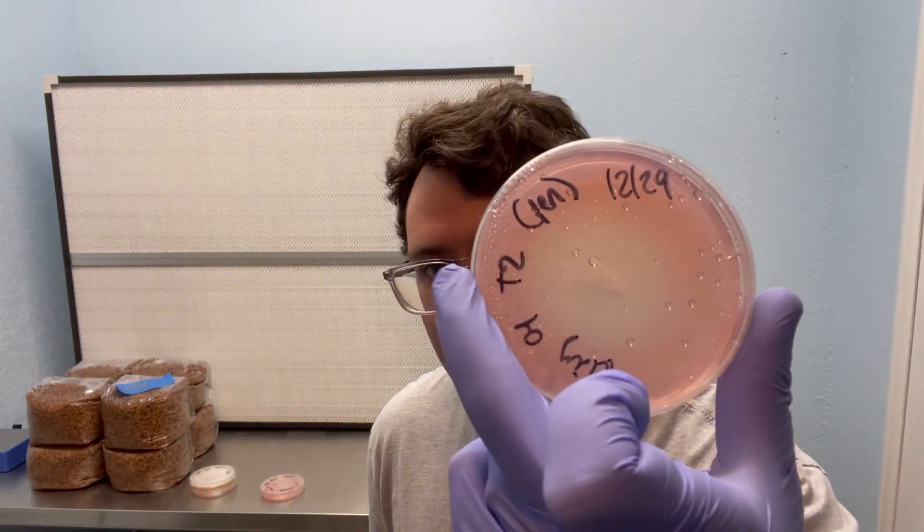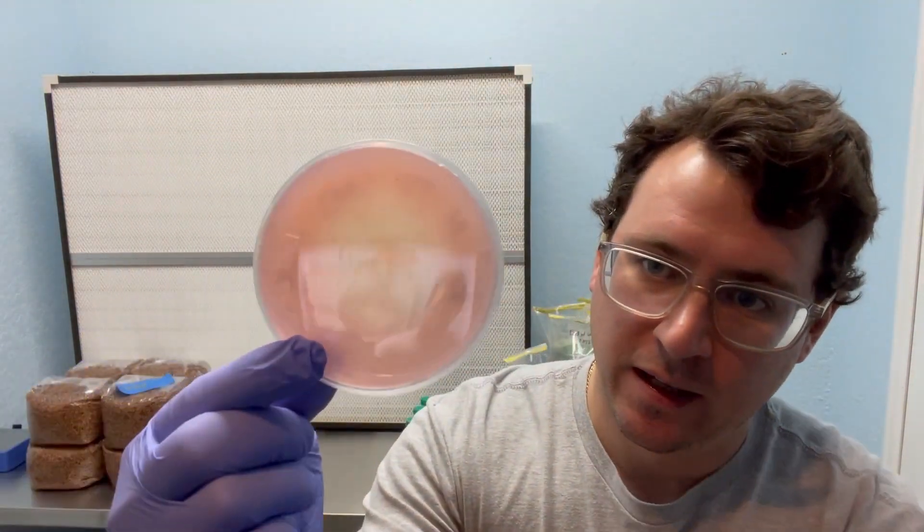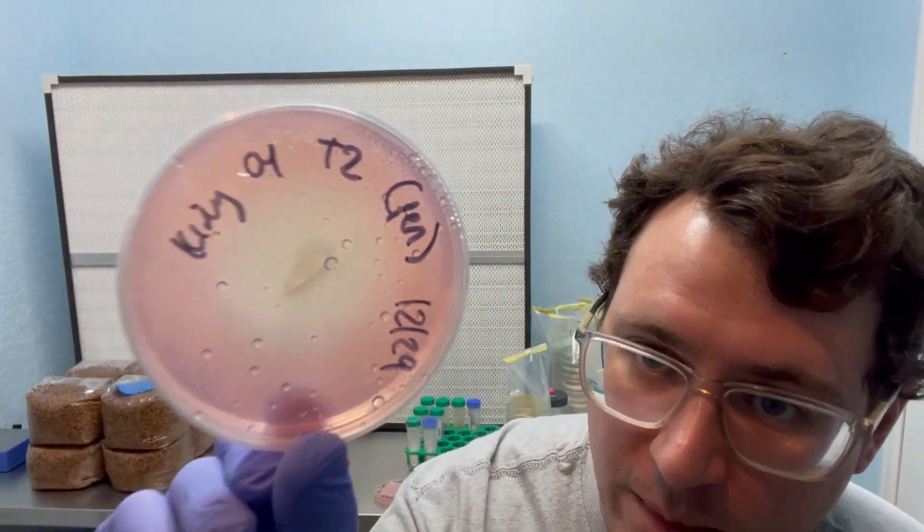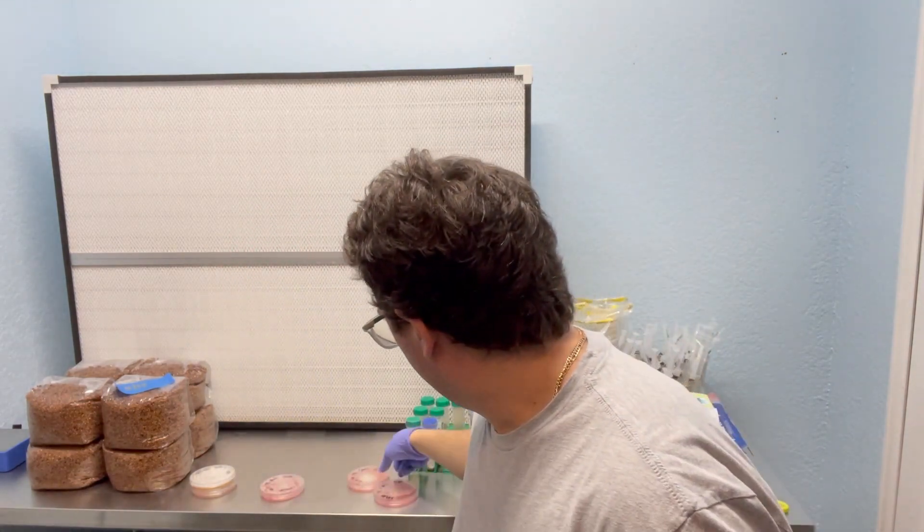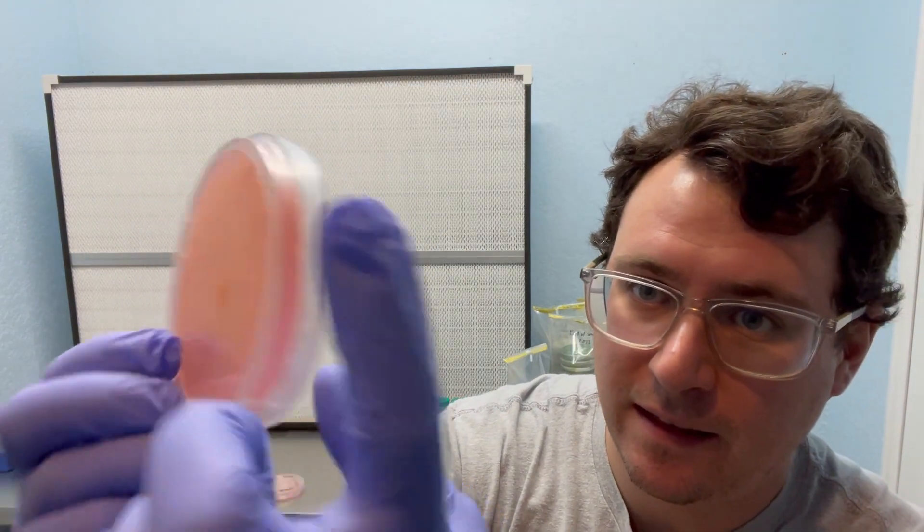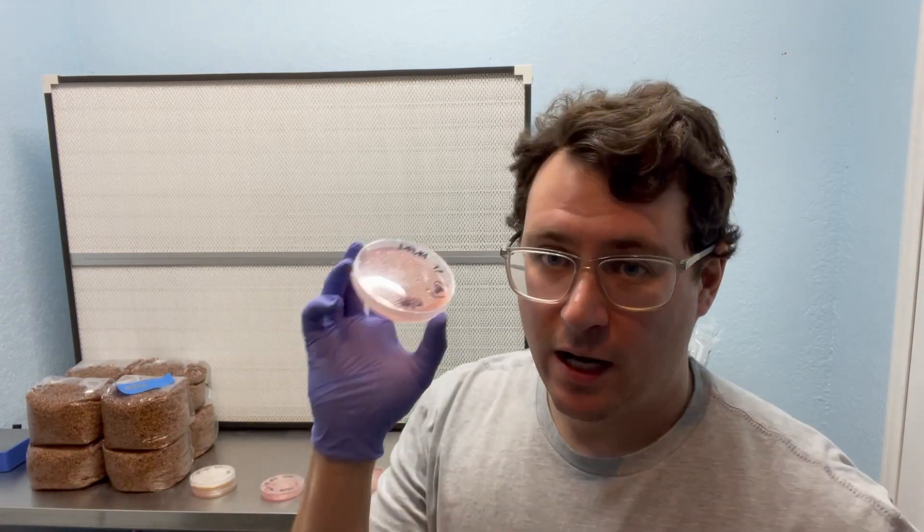All right everyone, it's been five days since I transferred and I've got a really nice looking king oyster. So this is the ideal plate that I like to work with. It's got growth almost up to the edge. Very clean, healthy mycelium. So that was the king oyster transfer. And now, if you take a look at that lion's mane, you can see there's still a culture near the edge. So even though I tried my hardest, I still transferred a little bit of that penicillium mold. And there's a couple options.